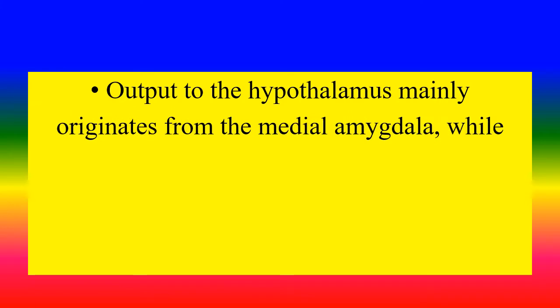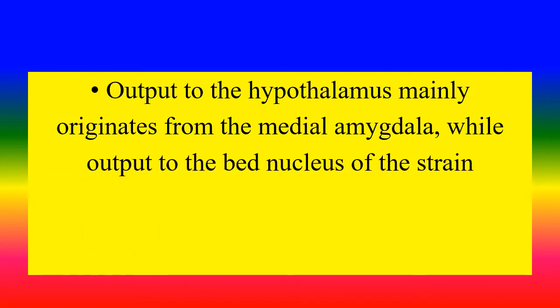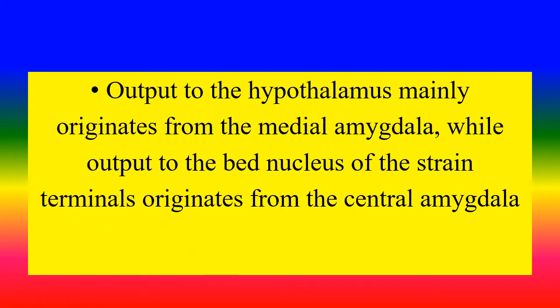Output to the hypothalamus mainly originates from the medial amygdala, while output to the bed nucleus of the stria terminalis originates from the central amygdala and the medial amygdala.